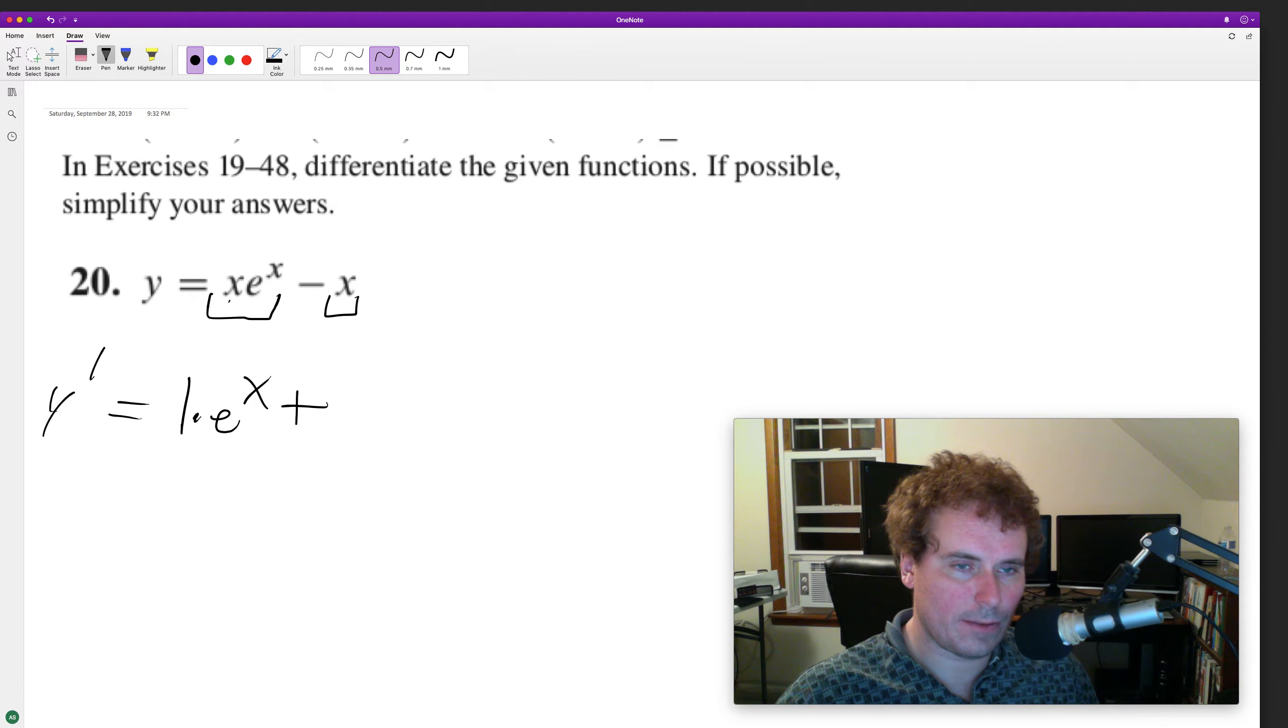plus with the product rule, and then we'll have X times the derivative of e raised to the X. As we take the, pull down the X, take a derivative, that's just 1 times e raised to the X. And then minus